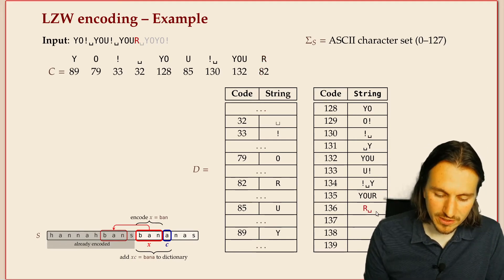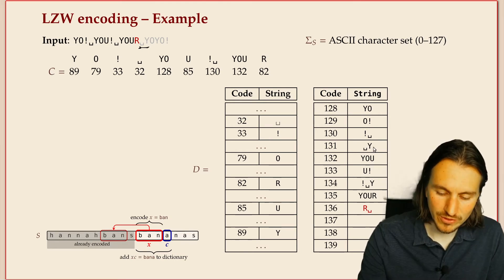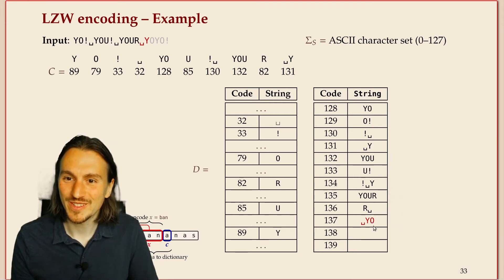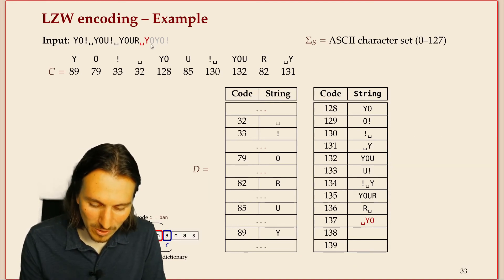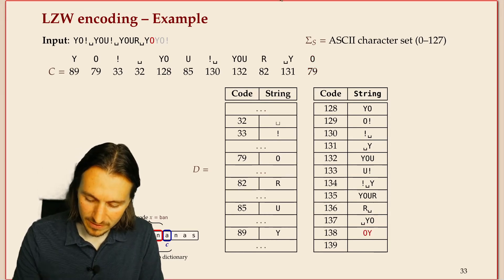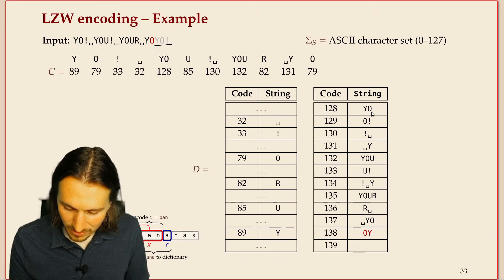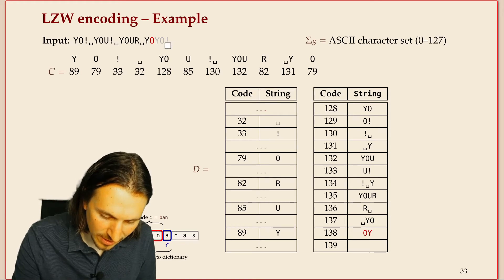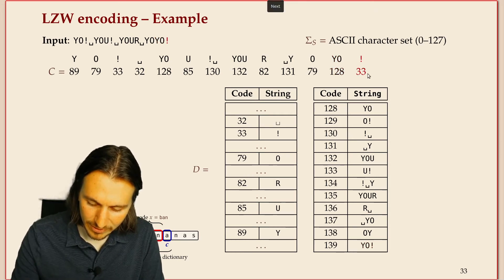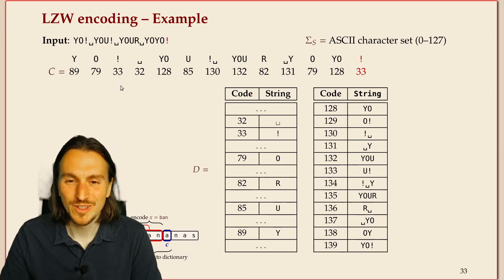'r' we haven't seen, so that's a single character. We add 'r ' to the dictionary. Then 'space y' is the longest match, so we encode that together and store 'space yo' in the dictionary. Then 'o' is a single character match, and we add 'oy' for future use. Finally, we encode 'yo' and the exclamation mark, producing the final encoded text for 'yo you your yo yo'.